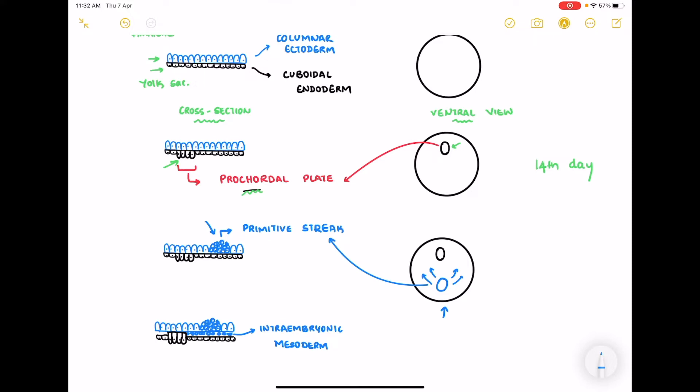The cells proliferating in the primitive streak spreads out between the ectodermal and the endodermal layer forming the intraembryonic mesoderm. So now the embryo is in three layered stage where you have the ectoderm, mesoderm and the endoderm. But what you need to note over here is that at the procordal plate the ectoderm and the endoderm are in contact with each other. The mesoderm does not separate your ectoderm and endoderm at the procordal plate. And this procordal plate becomes the buccopharyngeal membrane as the development progresses.